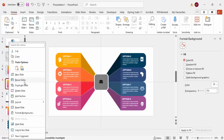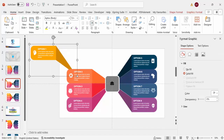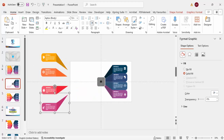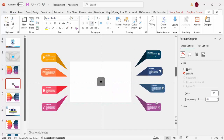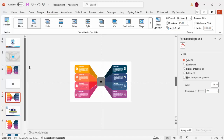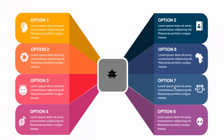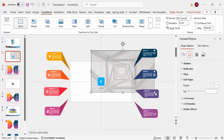Now it's time to create the morphing effect. Zoom out and duplicate this slide. On the first slide, move all the option groups outside of the slide area, leaving only the center shape visible. Go to the second slide, go to Transitions, and apply Morph. Reduce the duration to one second. When you play it, the options morph into view. You can change the background — I've used a specific background image here.